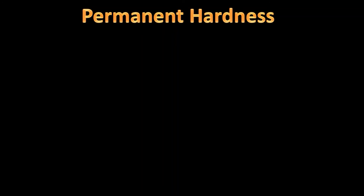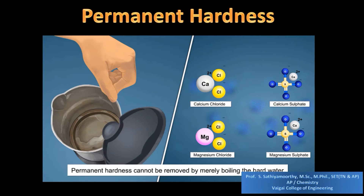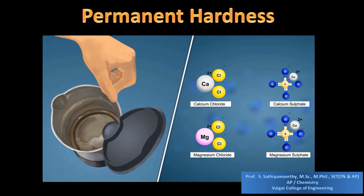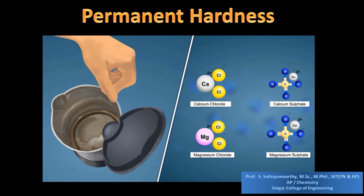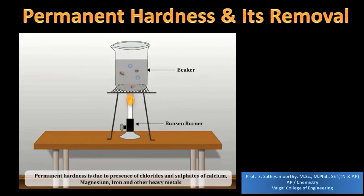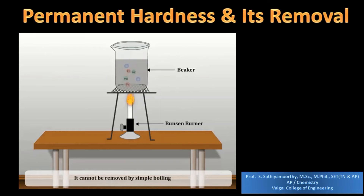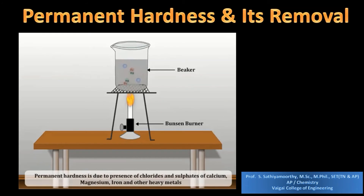Now we are going to see about permanent hardness-producing salts. Here on the left side of the image you can see a flask containing scales formed — these are produced by the permanent hardness-producing chlorides and sulfates of calcium and magnesium. Permanent hardness cannot be removed by boiling. Here you can see the image where the permanent hardness-containing water is being boiled, but the permanent hardness-producing salts remain in the water even after boiling.